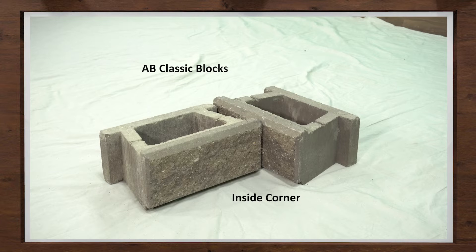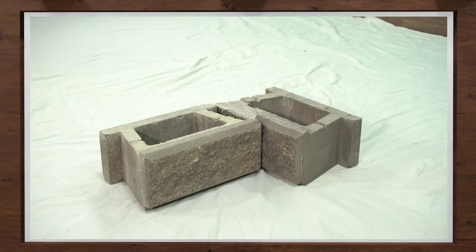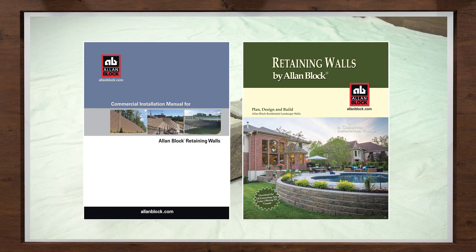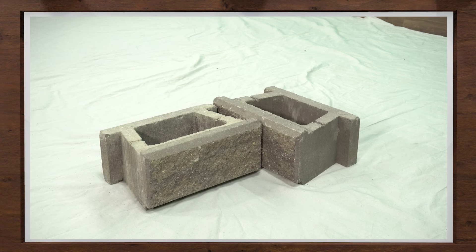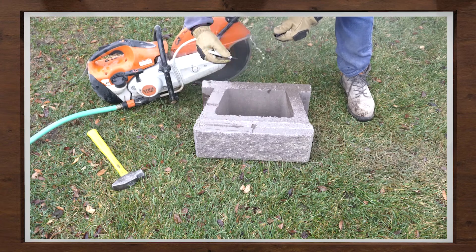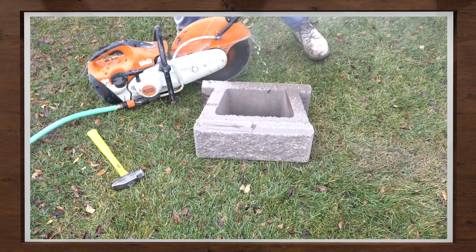I won't be showing backfilling in this first part, but I will bring in geogrid placement. Before we start, and so you are aware, one of the top lips on each course will need to be marked and removed to construct an inside corner properly. For complete installation details, see our installation manuals on allenblock.com. What I have here is two AB Classic blocks laid out to create a 90 degree corner. I have marked the area that will need to be removed to accommodate the next course stacking on top.